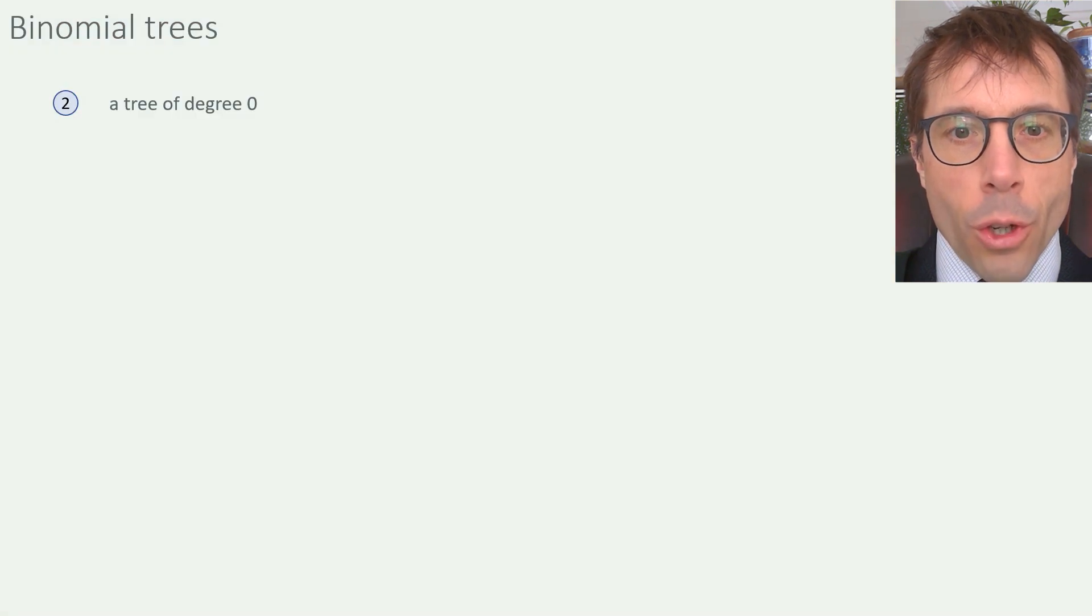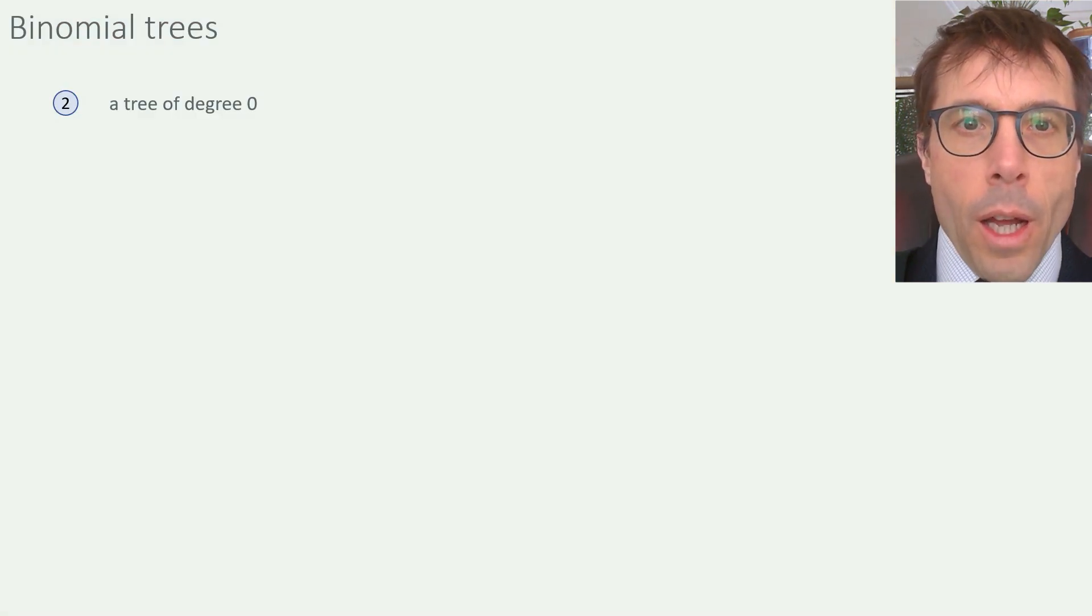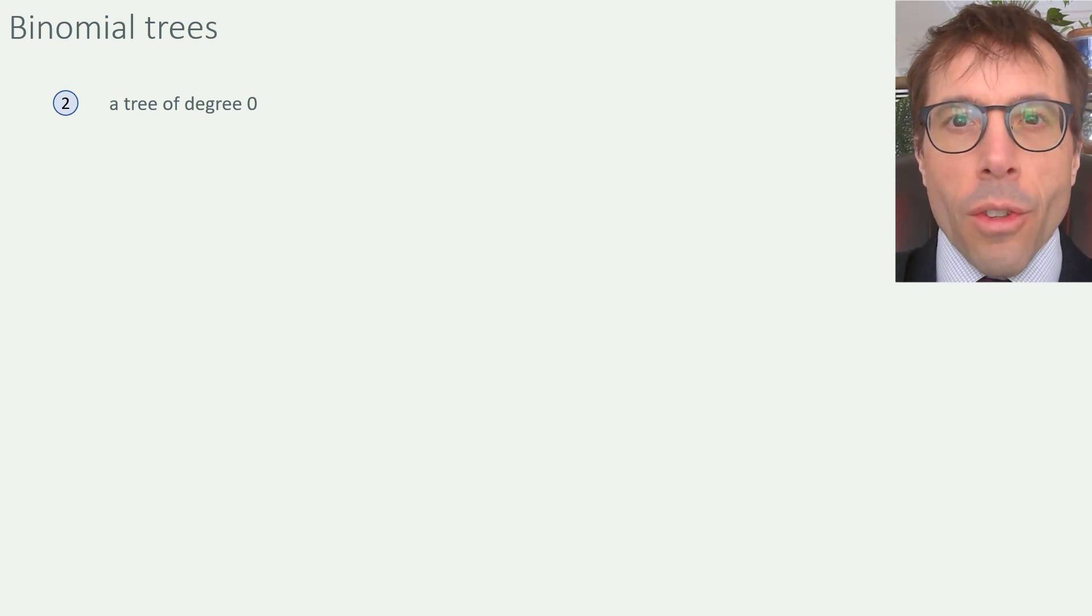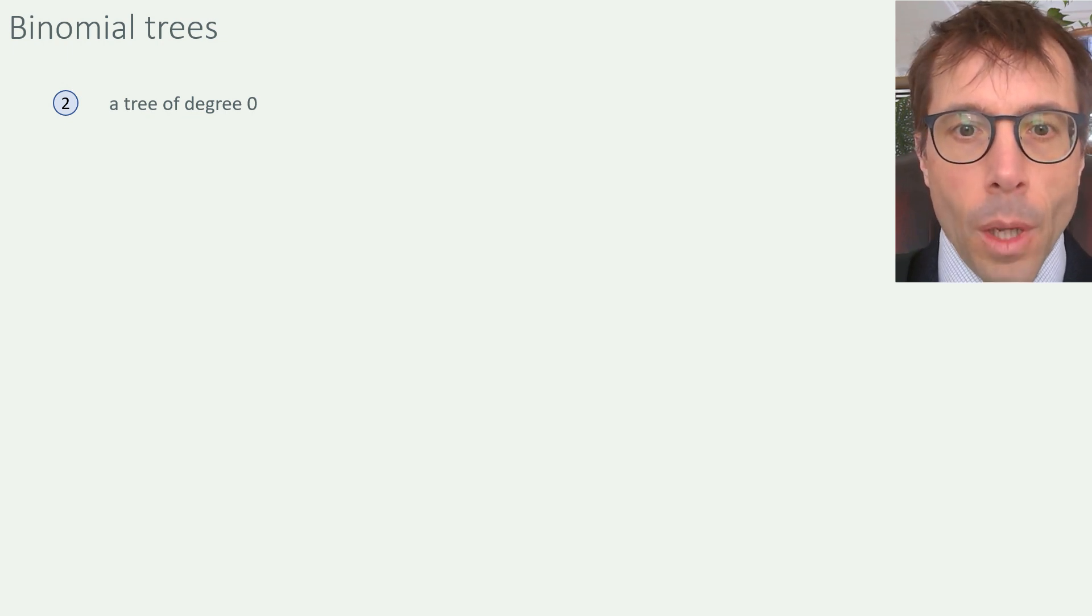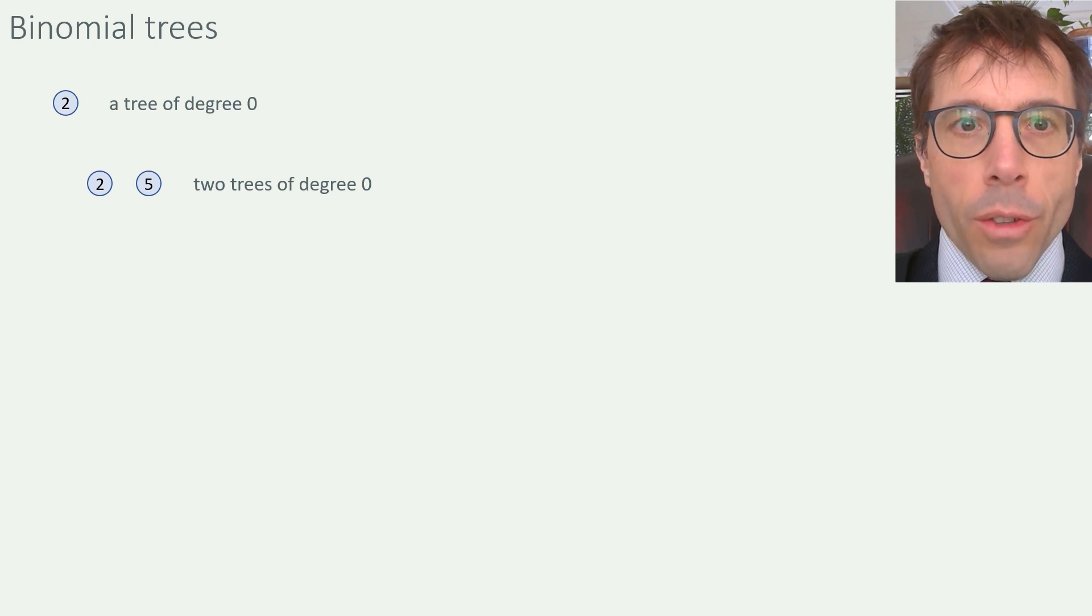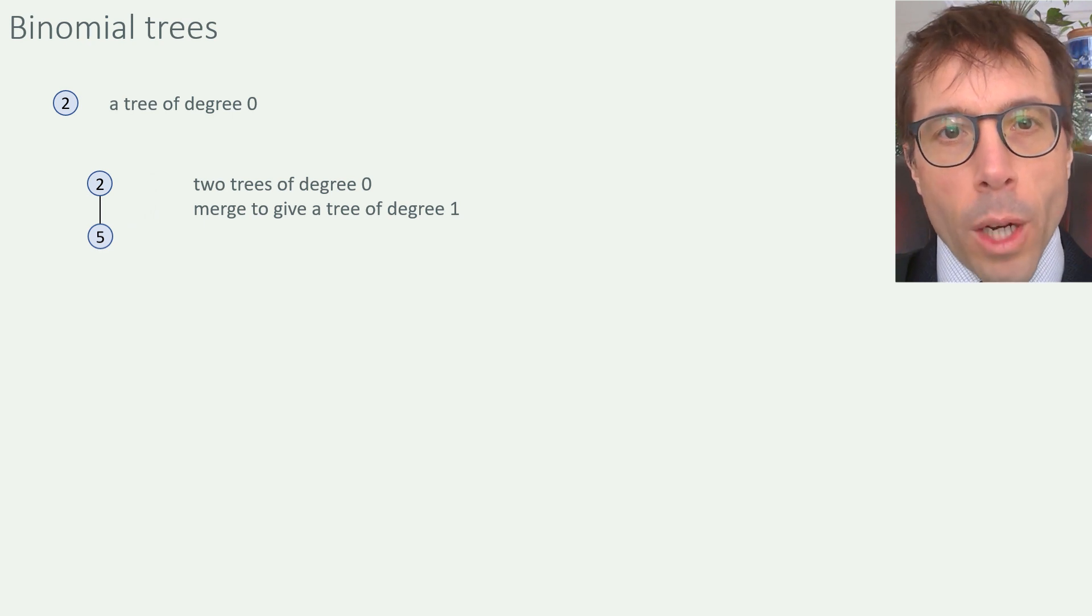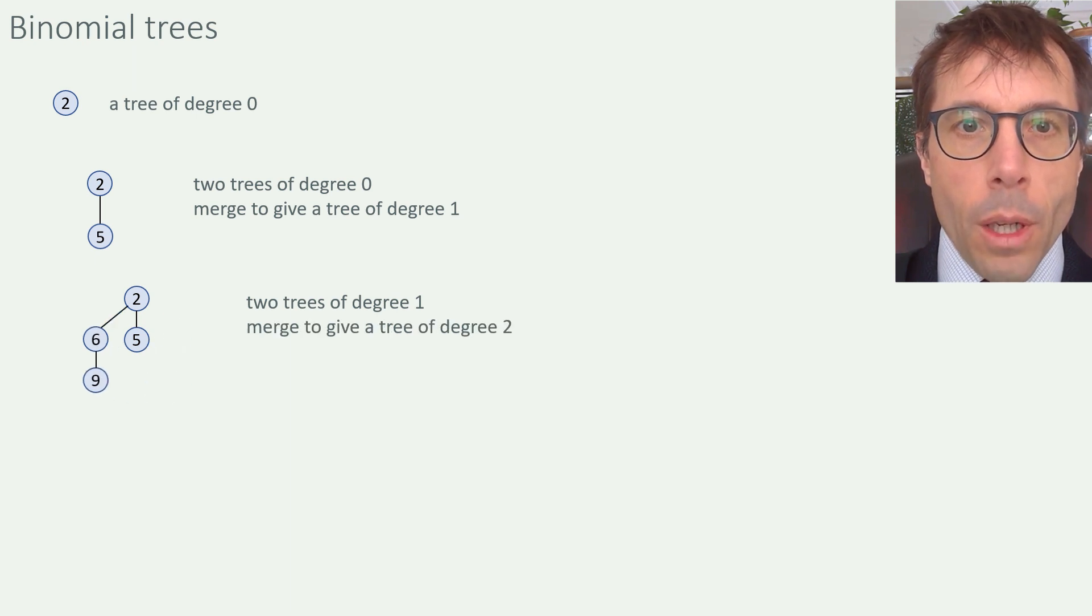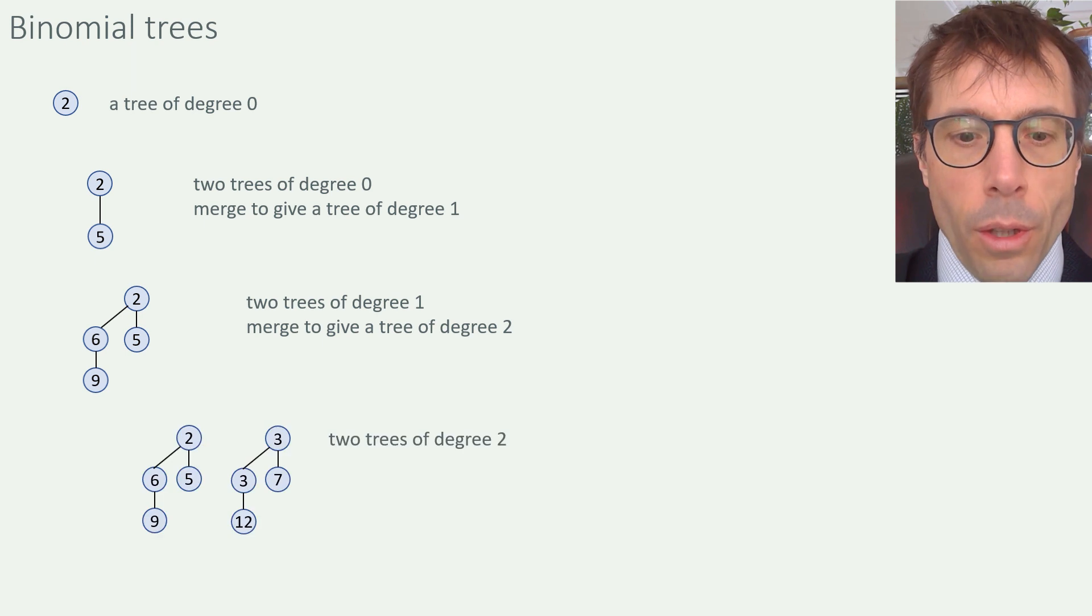Okay, next implementation, the binomial heap. Actually, for this one, first we need to define something else, a binomial tree. This is the name for trees with a very particular shape. A binomial tree of degree zero is a single node on its own, a tree with just one item. If you take two binomial trees of degree zero and merge them, you get a binomial tree of degree one. And if you take two trees of degree one and merge them, you get a binomial tree of degree two, and so on.